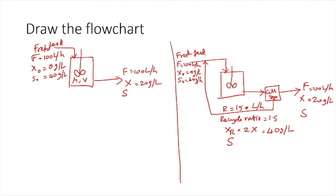The stream which leaves the chemostat and enters the cell separator would have a flow rate of F plus R, with a biomass concentration of X1 and dissolved substrate concentration of S. Now that we have all the information regarding both systems, let us solve this problem using the fundamentals we had learned for biochemical processes.